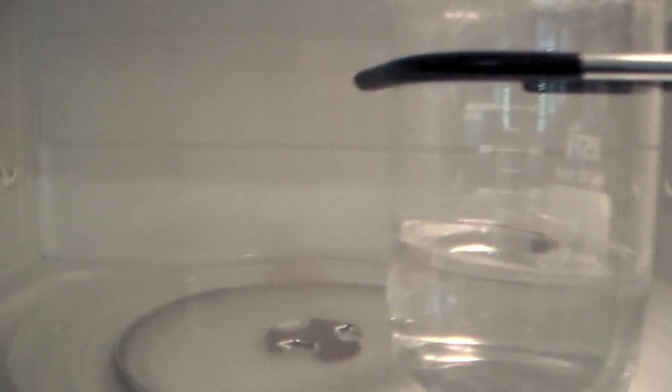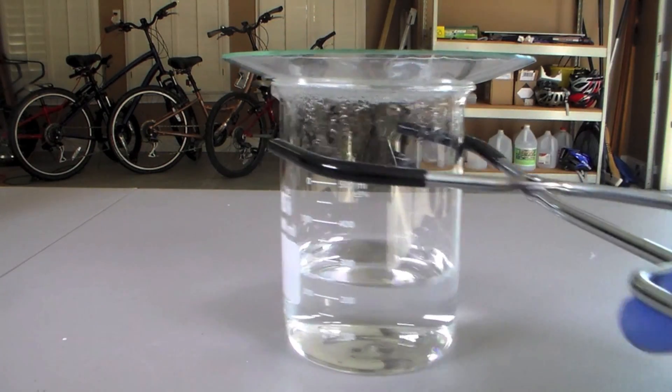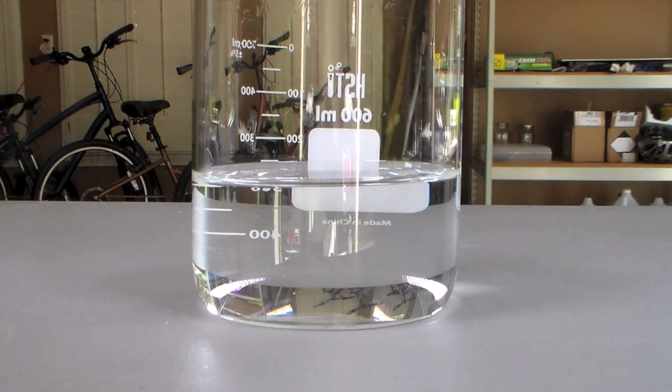Once everything was dissolved, the beaker was removed from the microwave and allowed to cool to room temperature. After cooling, you can see a nice deposit of crystals on the bottom of the beaker.